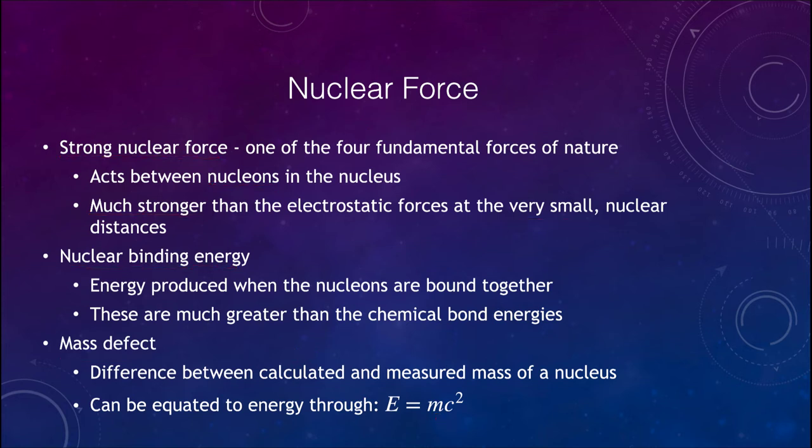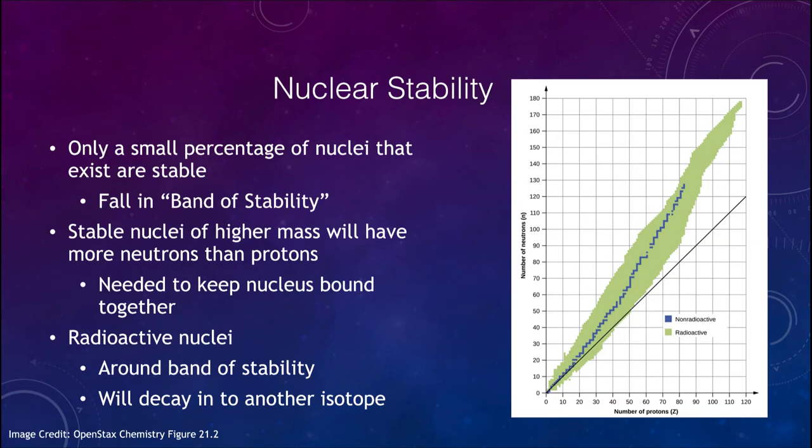Not all nuclei are stable. There is actually a range of nuclei that are stable, but it's only a very small percentage of the nuclei, and these fall in what we call the band of stability. The band of stability here is kind of this bluish jagged line going up. Notice how it starts out low here and goes up higher and higher as it heads up.